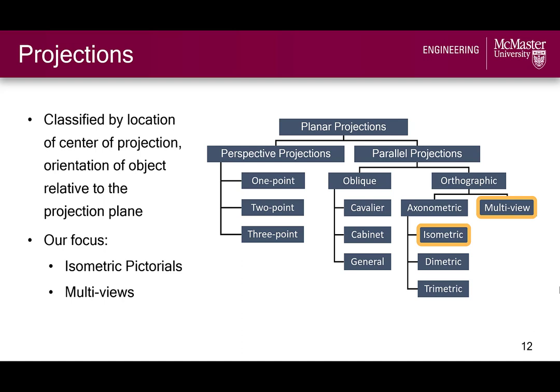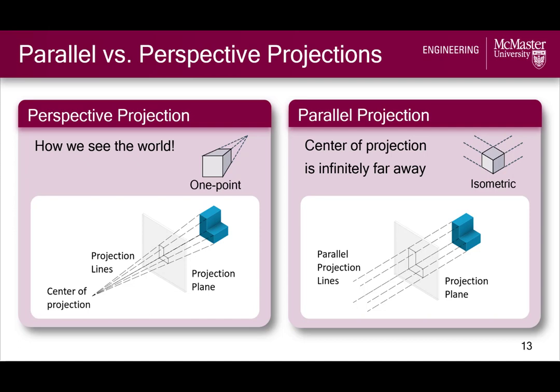Both of these classes fall under the parallel projection category, which differs from perspective projections by the location of the center of projection. The center of projection is where projection lines — also known as sight lines — converge to a single point, like the eyes of the observer in this diagram. Perspective projection is how our eyes see the world, where the center of projection or observer is some finite distance from the object.